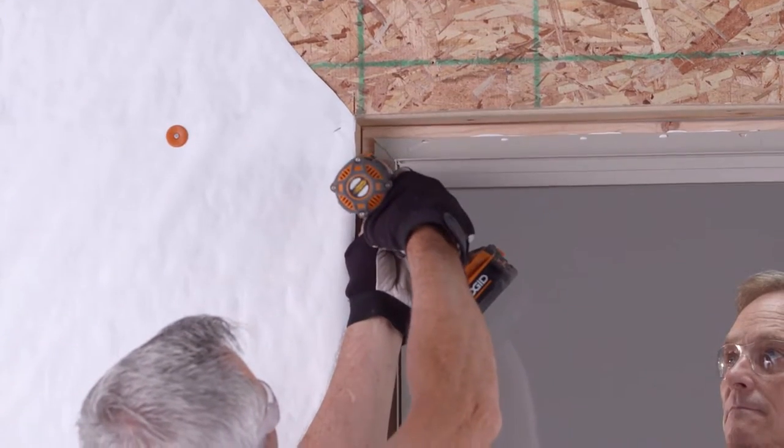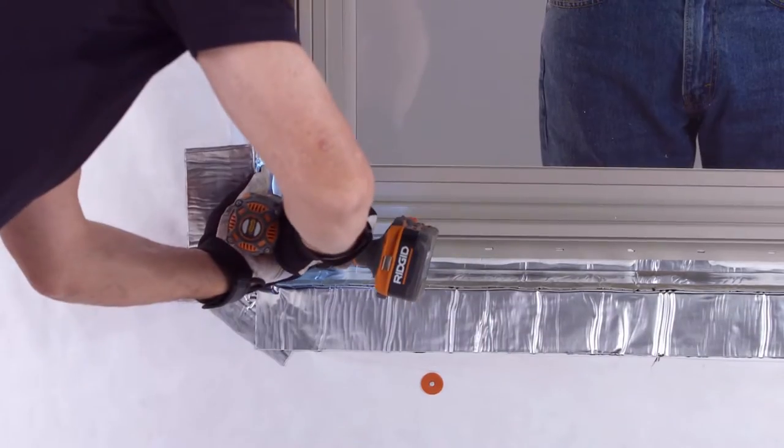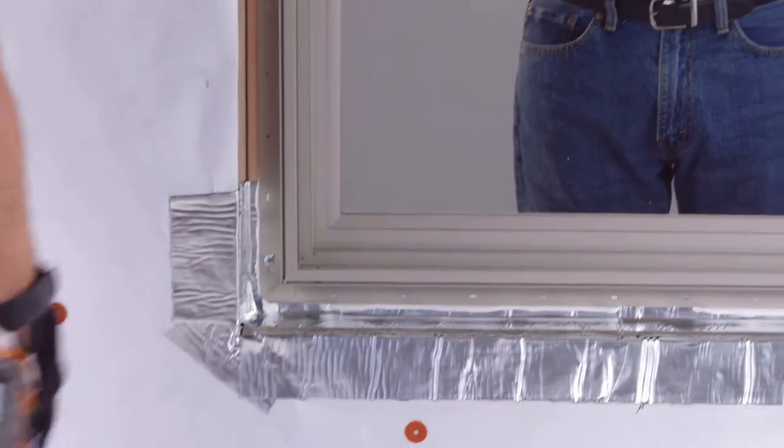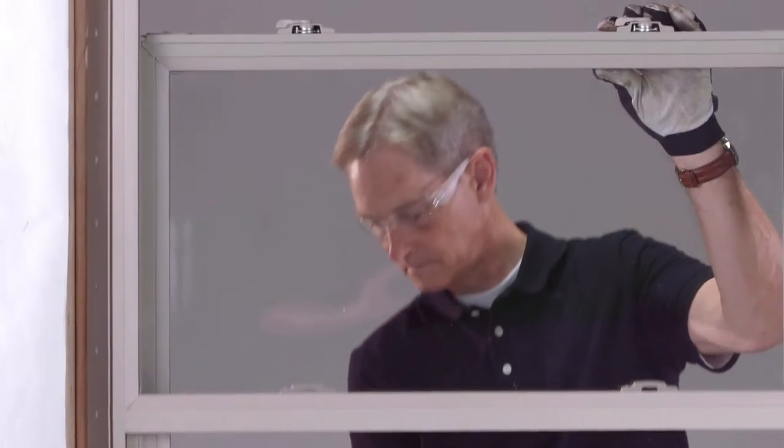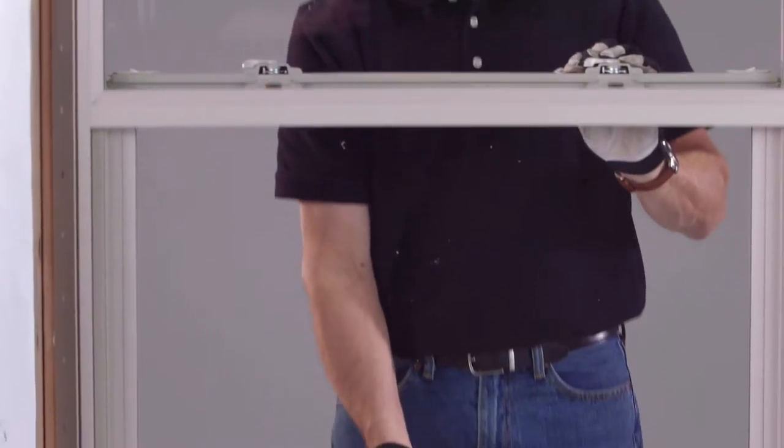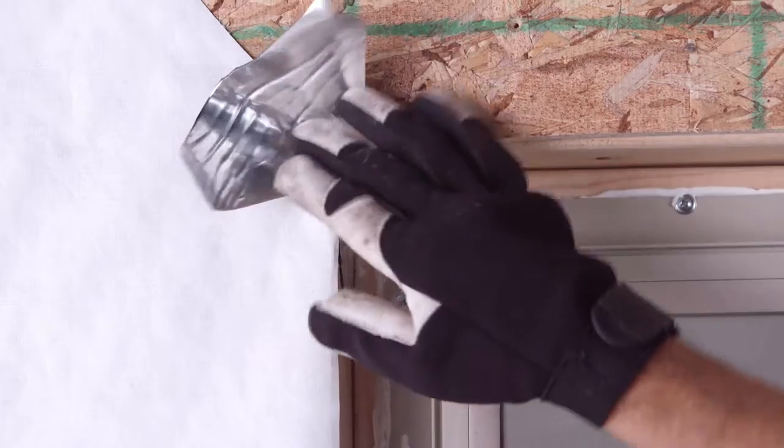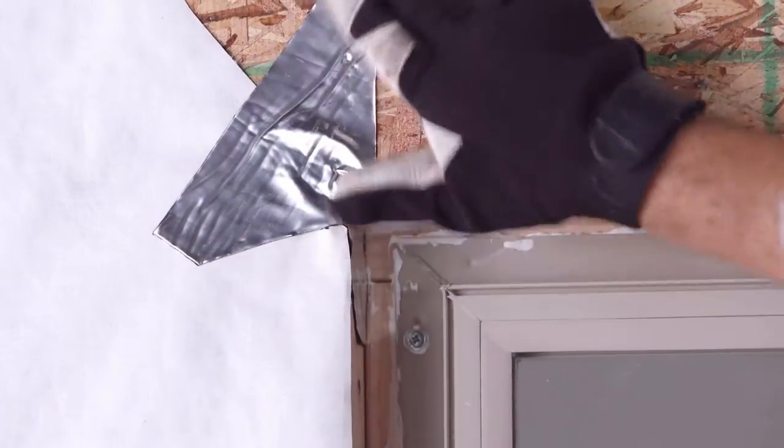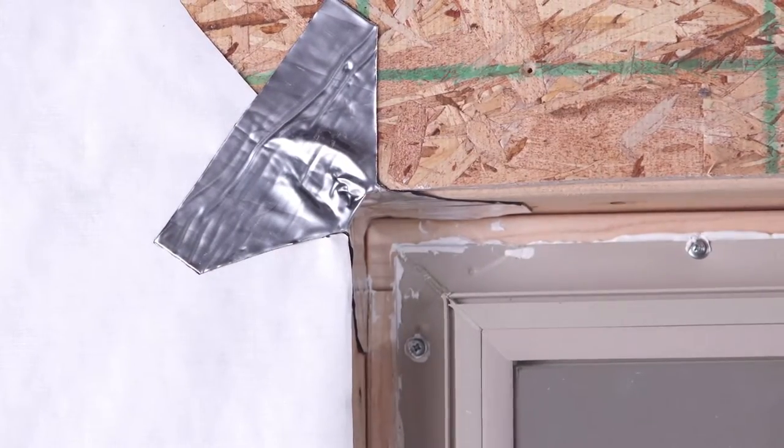You are now ready to fasten the window using the manufacturer's installation instructions. During this process, continue to make sure the window operates smoothly. Remember to tool any bulging sealant flat so it doesn't interfere with future cladding installation. Please remember, some manufacturers may require you to install corner guards at the head and side jams.